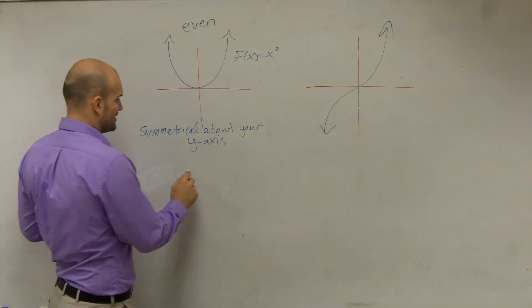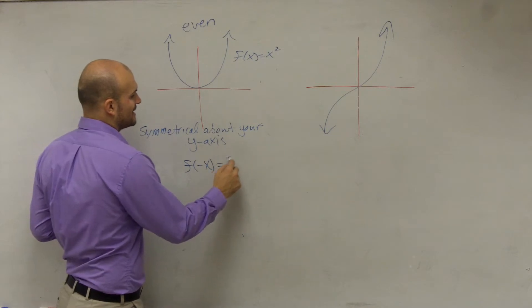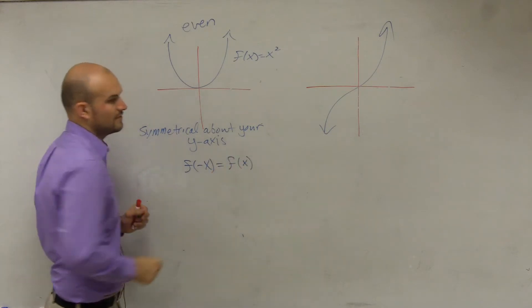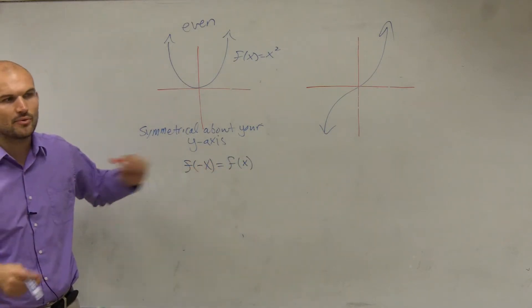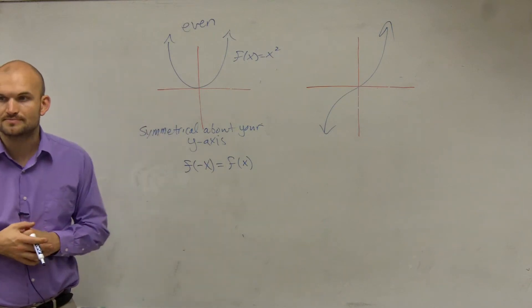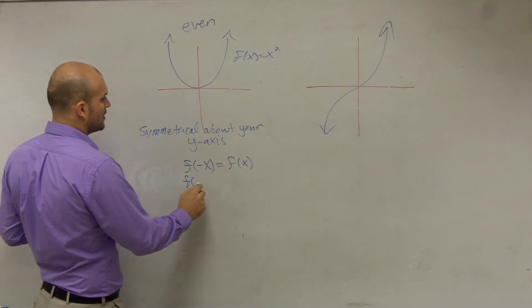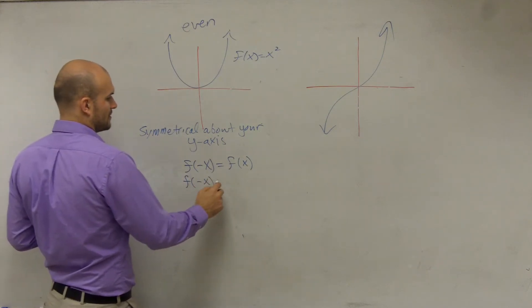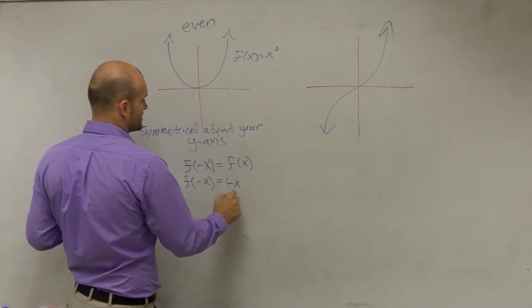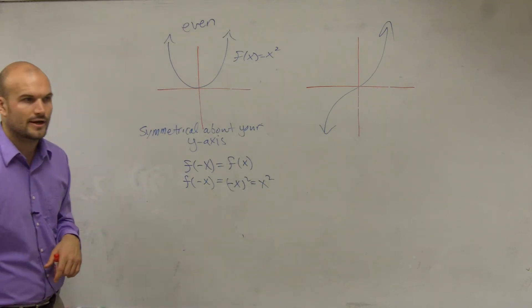And the other important thing is if I was to plug in f of negative x, I get out f of x. That's something very important for you guys to understand. So this is what we call an even function. Let's test it. F of negative x equals negative x squared, which is equal to x squared, which was our original function.